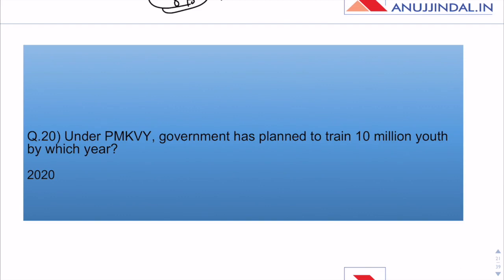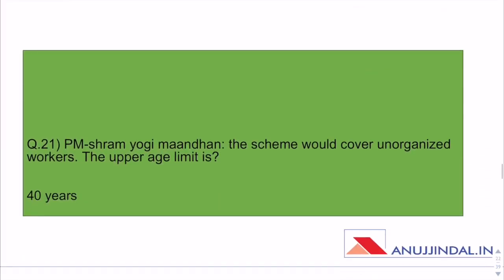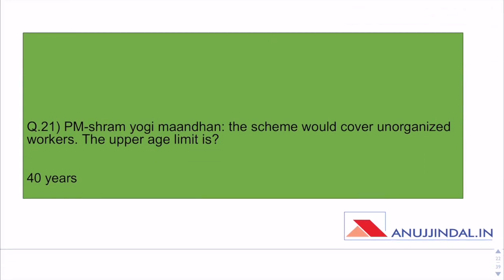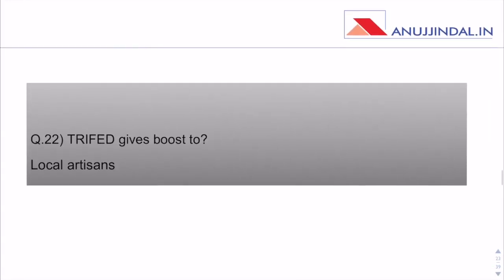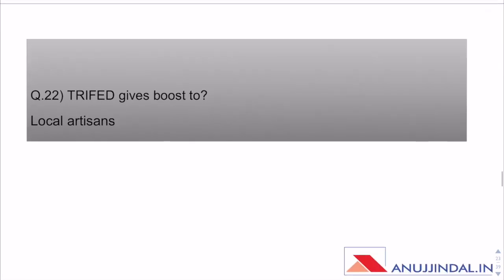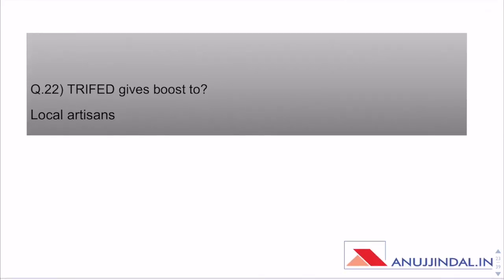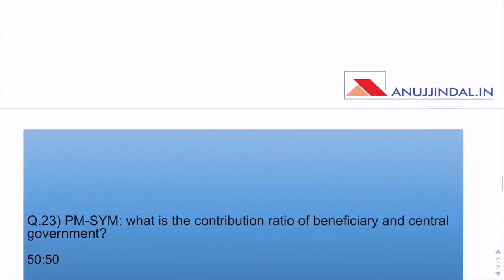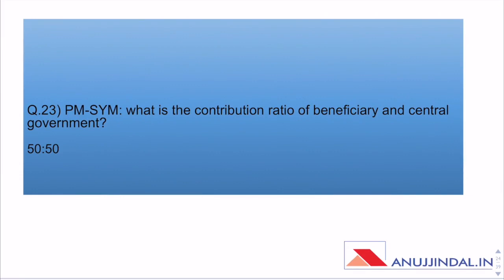Under Pradhan Mantri Kaushal Vikas Yojana, the government has planned to train 10 million youth by 2020 — an easy question. Shram Yogi Mandhan is for unorganized workers; the upper age limit is 40 years. Very easy if you have studied current affairs, even once.